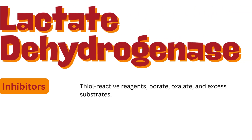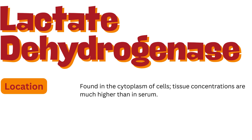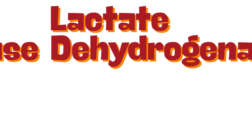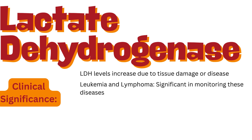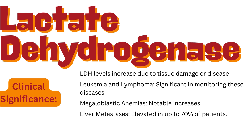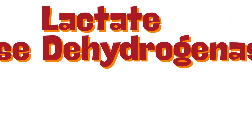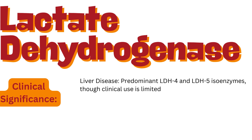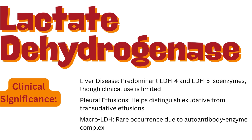Inhibitors of LDH include thiol-reactive reagents, borate, oxalate, and excess substrates. LDH is found in the cytoplasm of cells; tissue concentrations are much higher than in serum. Clinical significance: serum LDH levels increase due to tissue damage or disease. Relevant conditions include leukemia and lymphoma, megaloblastic anemias, liver metastases (elevated in up to 70% of patients), germ cell tumors (increased in about 60% of cases), liver disease with predominant LDH4 and LDH5 isoenzymes, pleural effusions — helps distinguish exudative from transudative effusions — and macro-LDH, a rare occurrence due to autoantibody-enzyme complex.